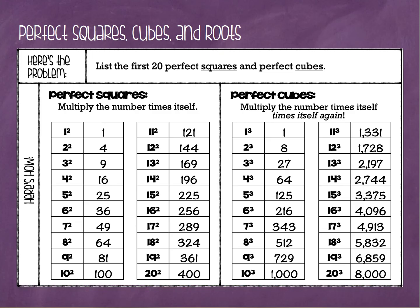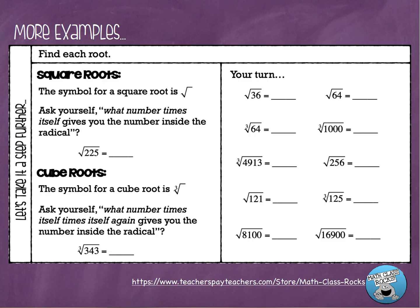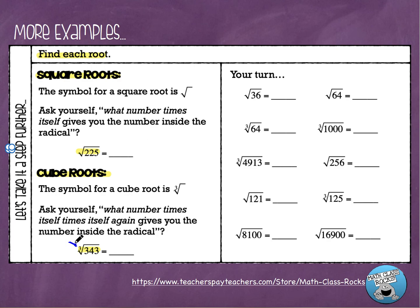We're going to do a couple more examples where we work backwards by finding each root — square roots and cube roots. This symbol is called a radical sign. The difference between a square root problem and a cube root problem is that the cube root will have a little 3 in front of the radical sign. Anytime you see that little 3, you know you're finding a cube root.